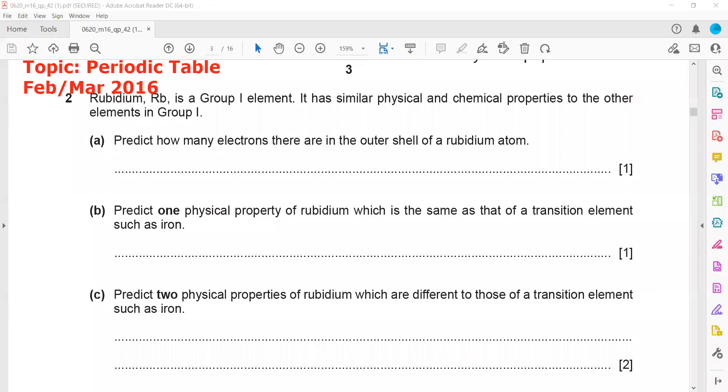So this one is a periodic table question from 5th March 2016 session. We have rubidium, which is a group 1 element, and it has similar physical and chemical properties to other elements in the group.